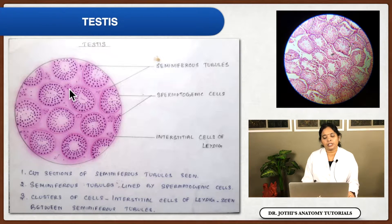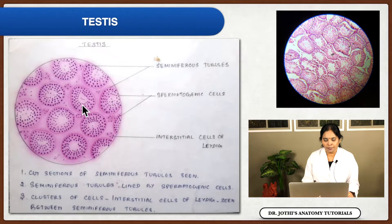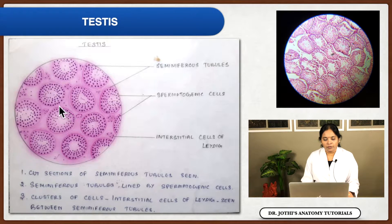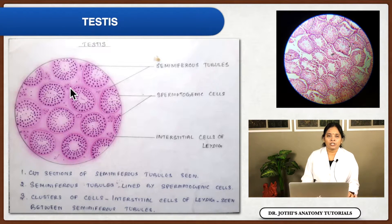The interstitial cells of Leydig release testosterone. So the three important cells to know are: the different stages of developing spermatogonia, the Sertoli cells supporting them, and towards the lumen you will see spermatids whereas at the basal level are spermatogonia. Outer to the seminiferous tubules, in the interstitium, special interstitial cells of Leydig are responsible for secretion of testosterone.